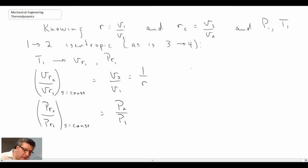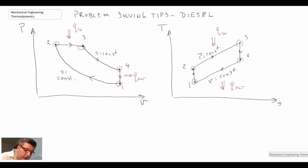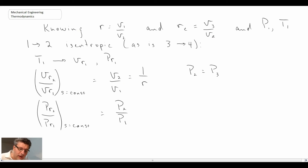The other thing that may be known or that we can use is P2 equals P3. If we look on our cycle we'll notice that this is a constant pressure heat addition process here, so P2 is equal to P3. And we can also use the ideal gas relation that we looked at when we considered the auto cycle problem solving tips.